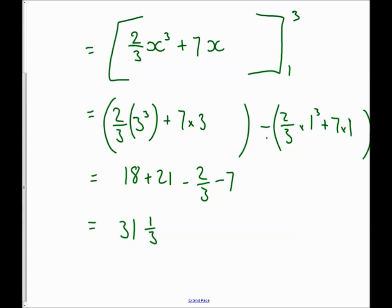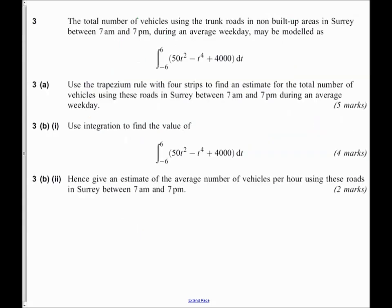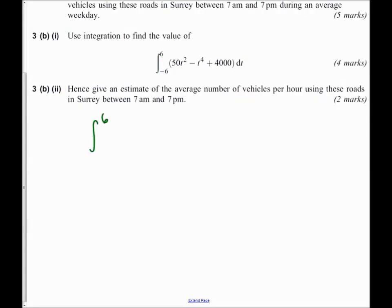Let's have a look at this in the question. So here's a use of maths exam question and I'm asked to integrate the total number of vehicles using a trunk road. They've given me the integral and you can see I've got my limits 6 and -6. The first part says use the trapezium rule. Now there's already a video on the trapezium rule, so I'm not going to show you that now. I'm going to move straight on to 3b part i.